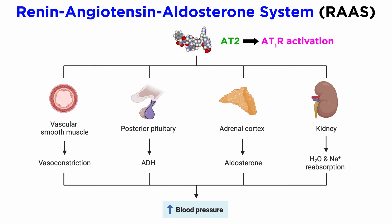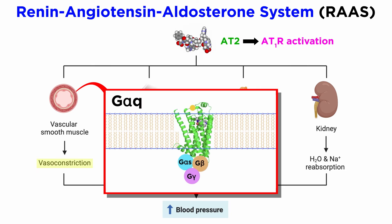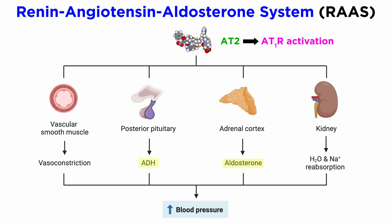As discussed in the bronchodilators tutorial, G-alpha-Q signaling on smooth muscle cells causes increased contractility through a few additional mechanisms involving protein phosphorylation. This is worth revisiting, but for the sake of brevity, the mechanism described above is the most important one.